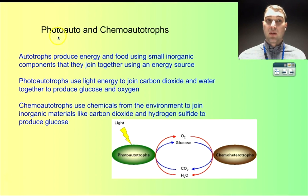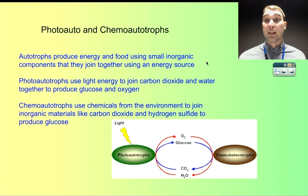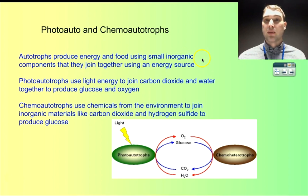We're going to start by looking at photo-autotrophs and chemo-autotrophs. Autotrophs get energy from an outside source and use that to make big molecules they can then break down for their own energy. They use small inorganic compounds and build them together using an energy source to make larger organic compounds.